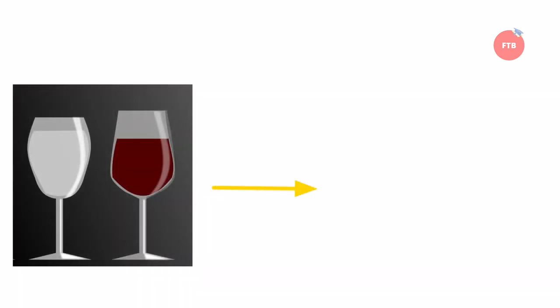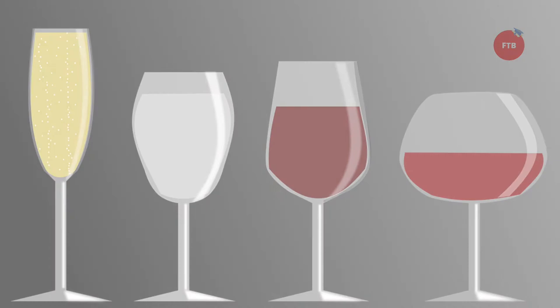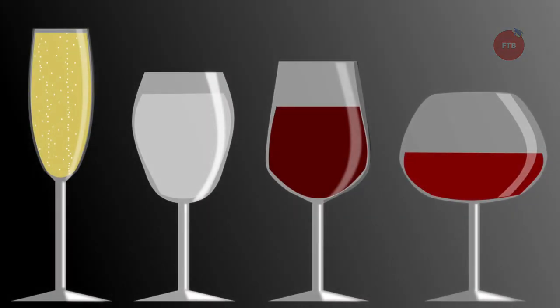The pH is also adjusted between 3.2 to 3.4 by adding tartaric acid. An important point to keep in mind: if we want to make white wine, the skin is removed and then the juice is extracted. Whereas if red wine is to be made, the juice is extracted along with the skin, because the pigment which gives its unique color to the grapes lies just under the skin and is extracted during fermentation. White wines are sometimes made from black grapes by only using juice.